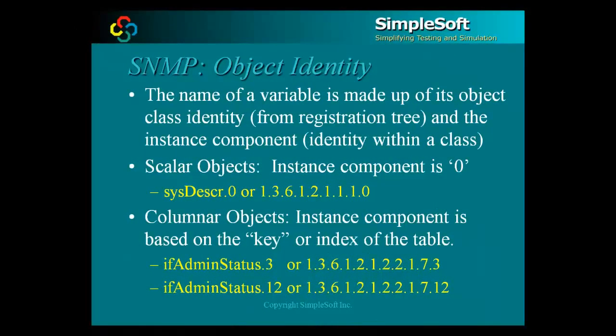The full identifier or name of the SysDescr manageable object is made up of two parts: its class identifier of 1.3.6.1.2.1.1.1 and its instance component. For scalar objects like SysDescr where there is only one of this type of object, the instance component is always the special value of 0. So the full object identifier for the SysDescr manageable object becomes 1.3.6.1.2.1.1.1.0.